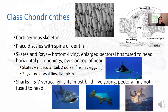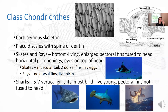The chondrichthyes have a cartilaginous skeleton — sharks, skates, rays. They have really neat scales called placoid scales. If you've had the opportunity to pet a shark or a ray, going in one direction it's nice and smooth, but going back against the scales it's really rough. In cross-section, the scale has a dentin spine — our teeth are made of dentin. So it's almost like the scales of sharks, skates, and rays are made of little overlapping teeth.